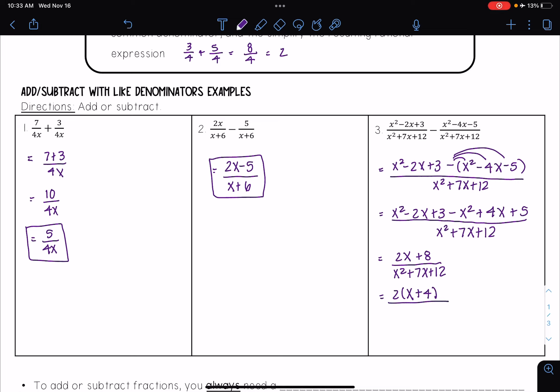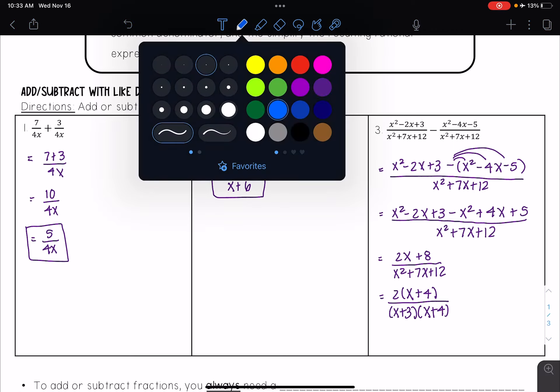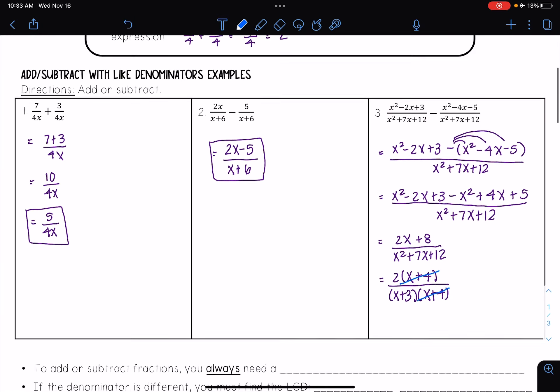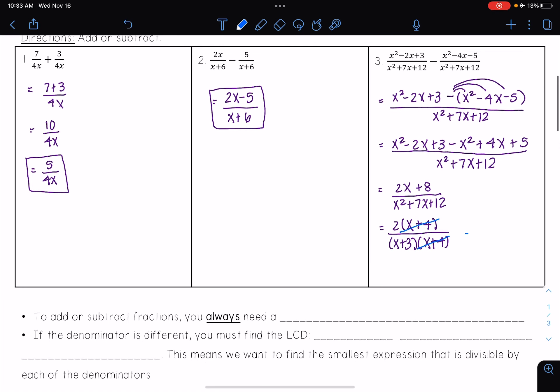When I factor the bottom, I'm looking for two numbers that multiply to 12 and add to 7. And I see that's 3 and 4. So this gets me (x + 3) times (x + 4). And so looking at the top and bottom, I see they share a factor of (x + 4). And so those cancel out. And I'm left with my answer of 2/(x + 3).